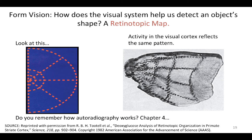Now let's take a look at how the visual system helps us detect an object's shape and its edges. It starts off by creating what's called a retinotopic map. This is how the image on the retina gets mapped onto the visual cortex, and this would be the corresponding activity in our visual cortex.